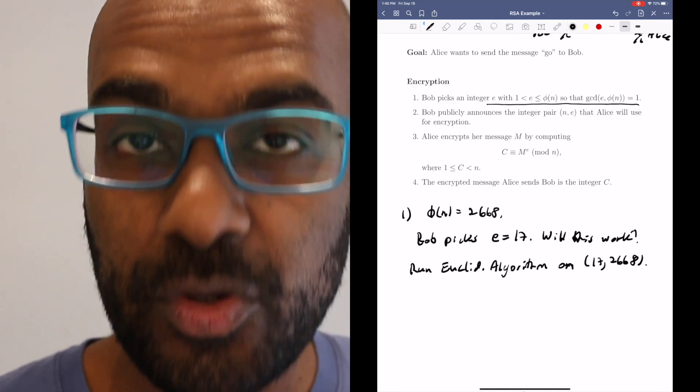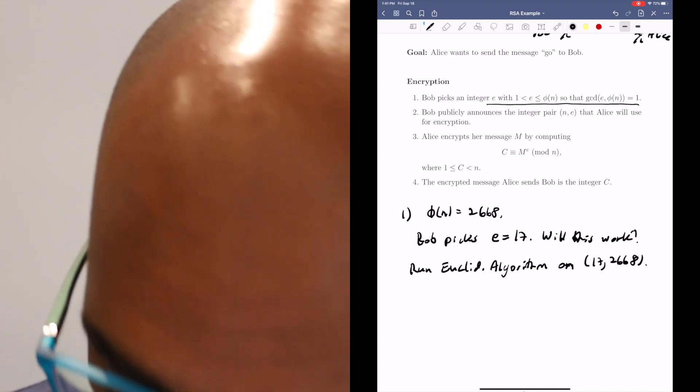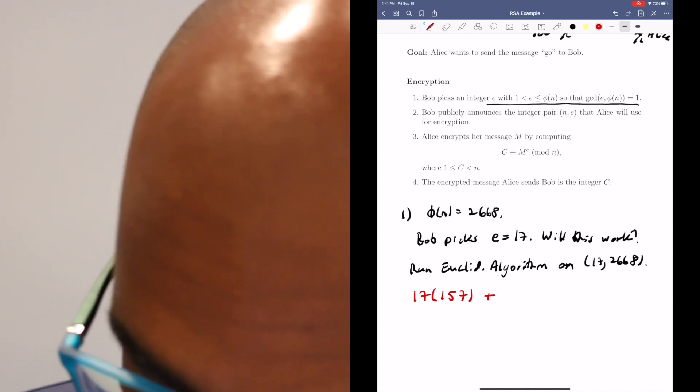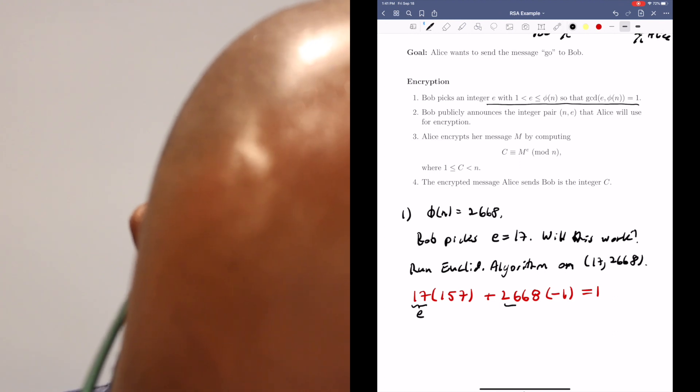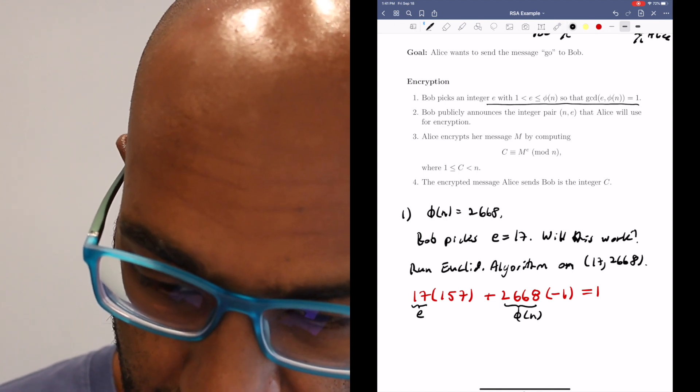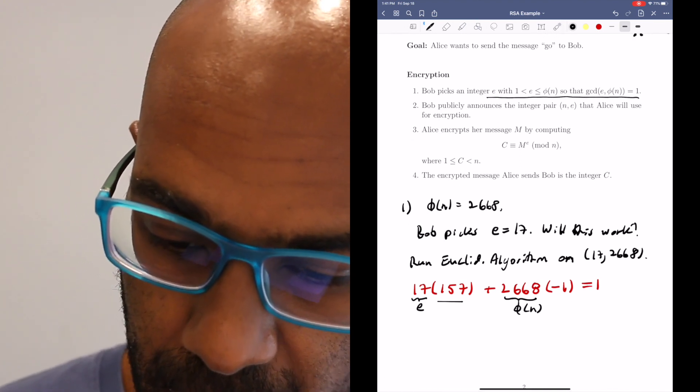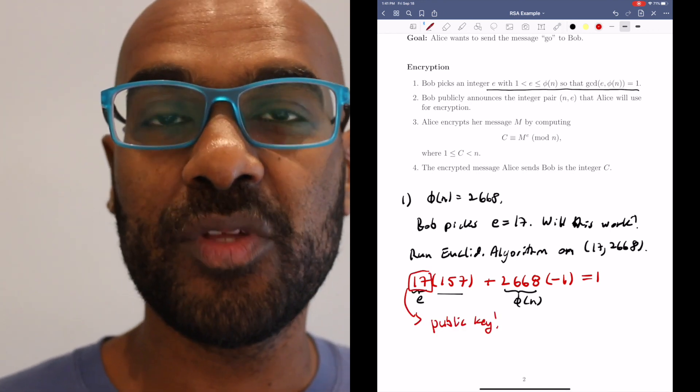If you do that, you can actually figure out a way to write 1 as a linear combination of these two numbers with integer coefficients. It turns out that 17 times 157 plus 2668 times negative 1 is 1. I'm going to emphasize again this number here is E and this number here is φ(n). We have E times some number is 1 plus a multiple of φ(n). That's great. So our public key then is going to be 17, and that's what we're going to send publicly to the entire channel.